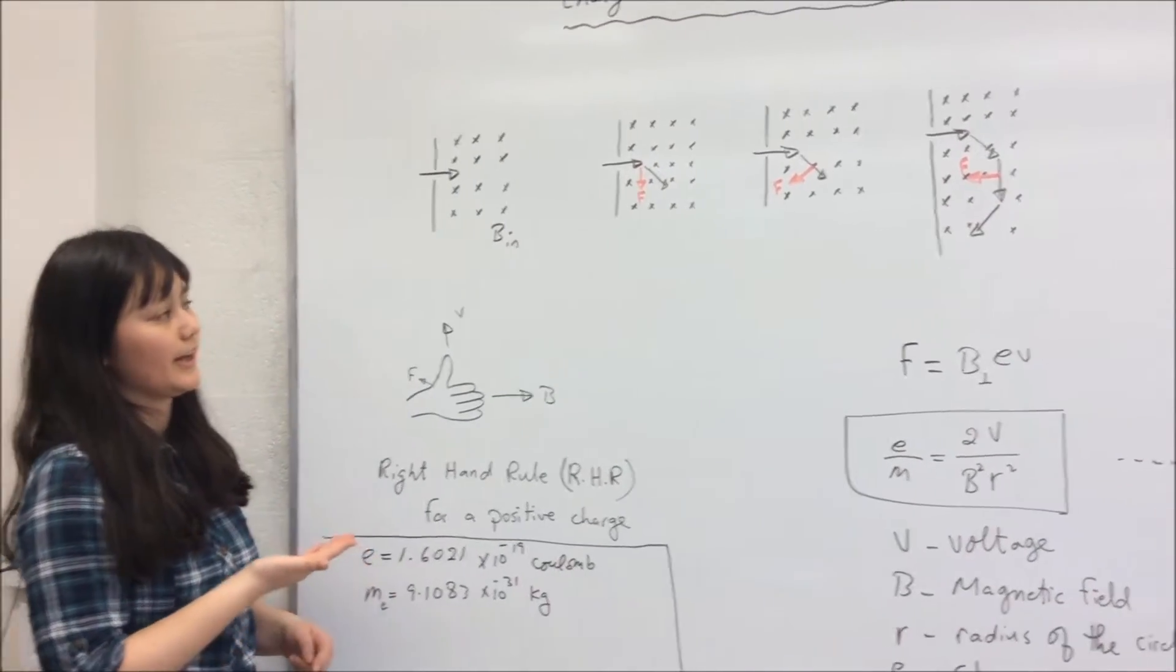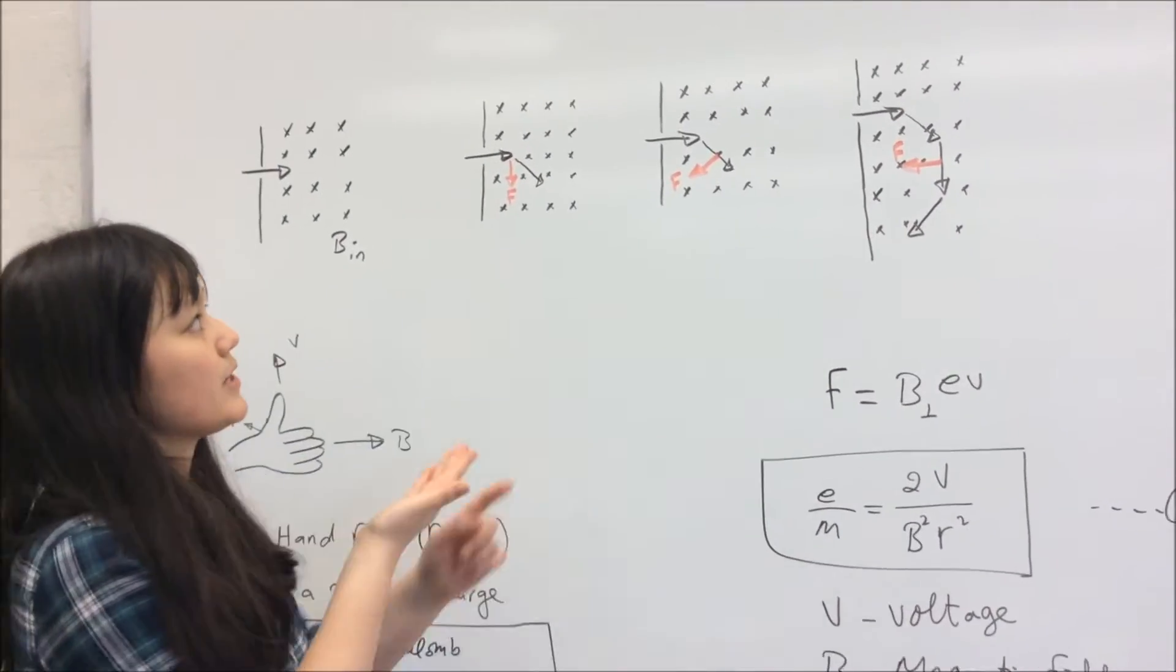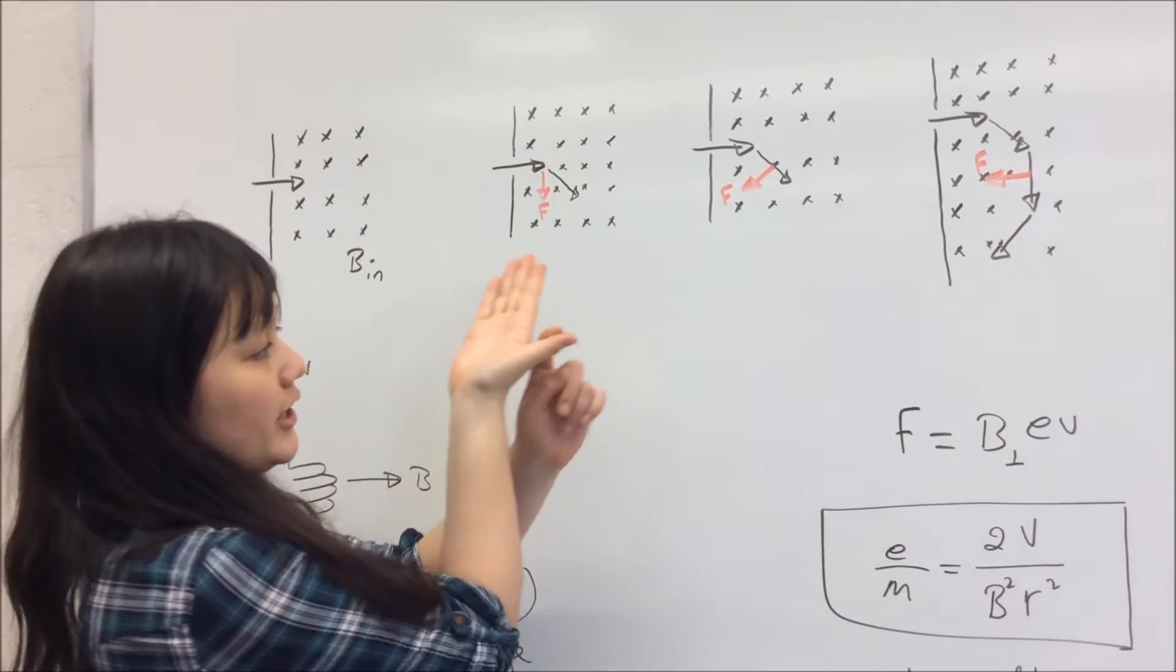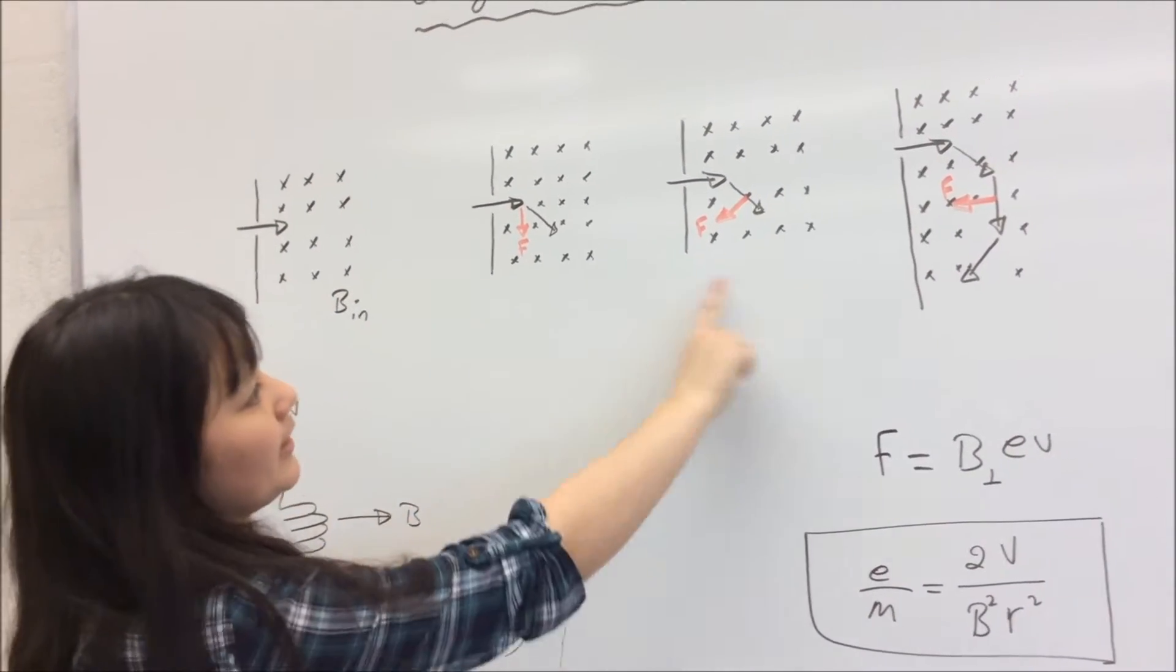Now let's trace the path of the electron. As you see by these diagrams, if you have this situation here, the electron is going to go in a circular path like this.